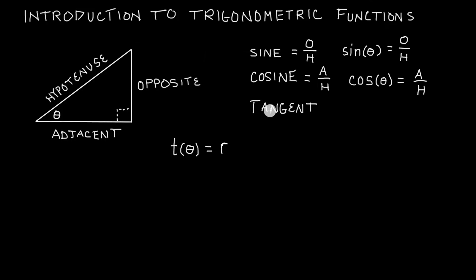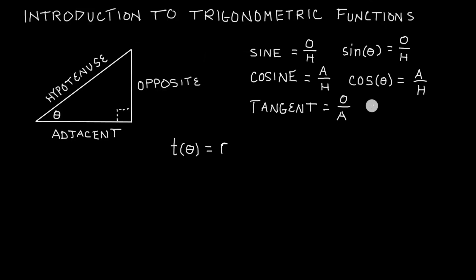What about tangent? Tangent can actually be thought of in a couple of different ways. The most simple case is the tangent of some angle is the opposite side divided by the adjacent side. So the tangent is equal to the length of the side that is opposite of the angle divided by the side of the triangle that is adjacent to our angle. The way we write tangent is TAN of theta. So the tangent of some angle theta is equal to the side that is opposite of our angle divided by the side that is adjacent to our angle.